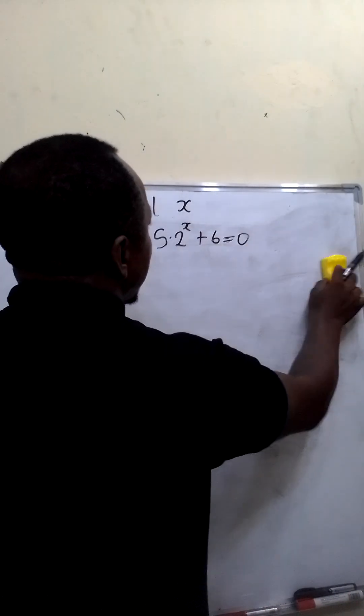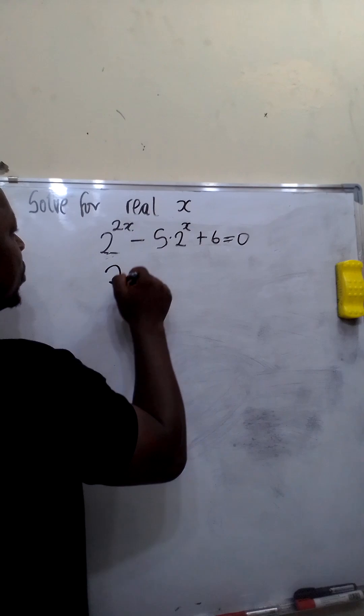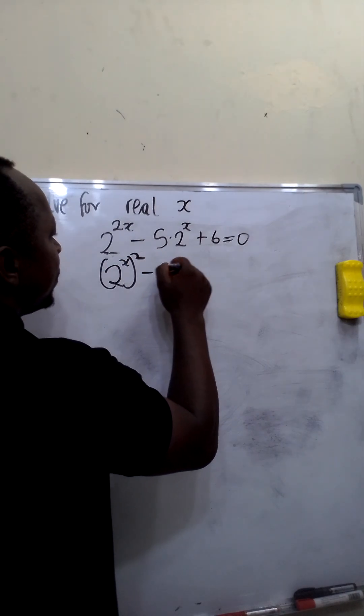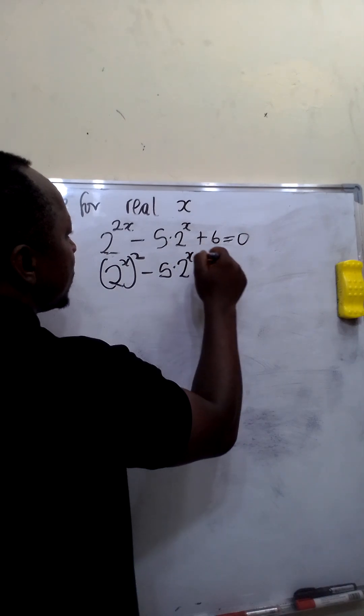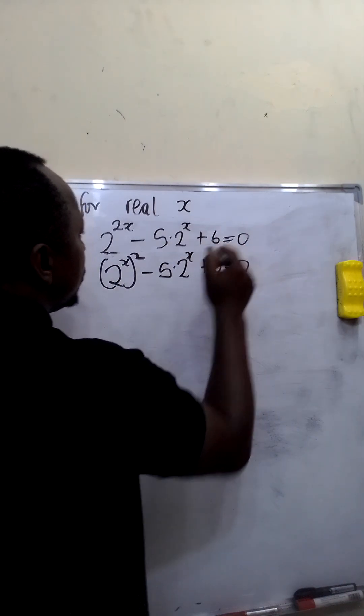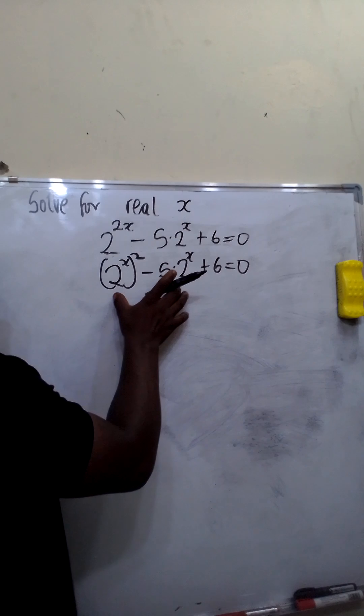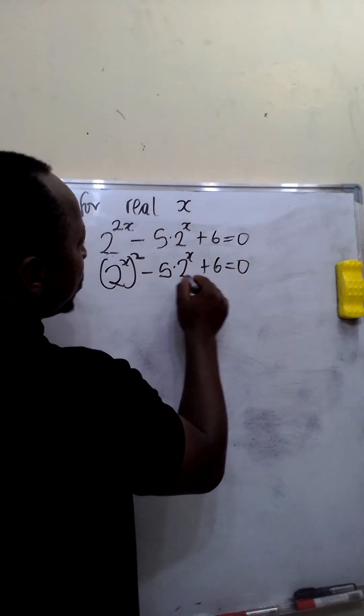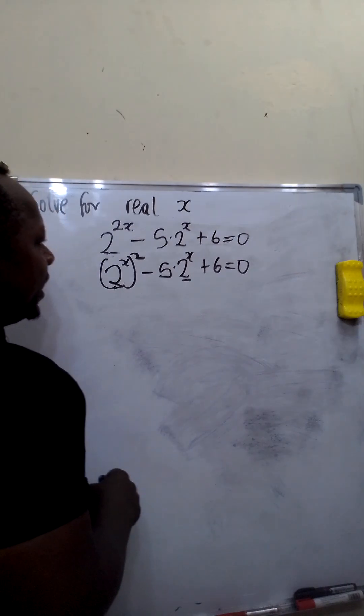So this equation can be written as 2 raised to the power x bracket square minus 5 times 2 raised to the power x plus 6 equal to 0. Now we can further simplify this equation by representing 2 raised to the power x with any letter.